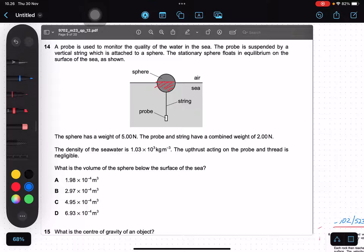We have 3 kinds of force on the sphere actually. We have one is weight of the sphere, 5 N. And the second one is 2 N, the combined weight between probe and string. And the last one is when this is sea level, on this volume we have upthrust force.